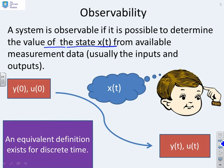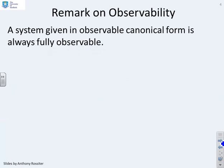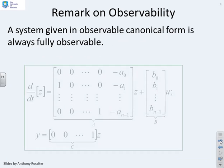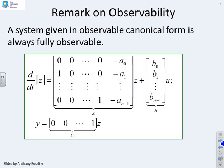An equivalent definition exists for discrete time. Remark then, a system given in observable canonical form is always fully observable. And there's the observable canonical form which was covered in the previous series.